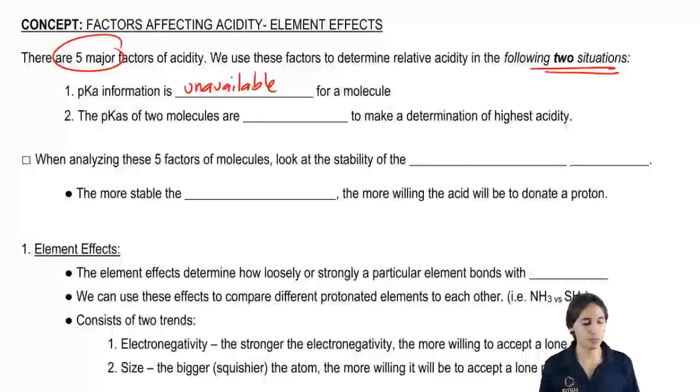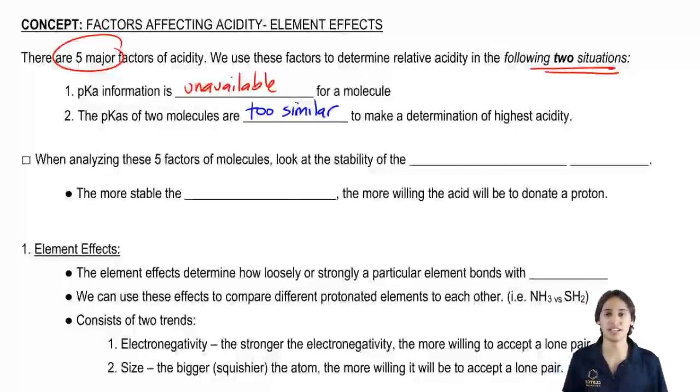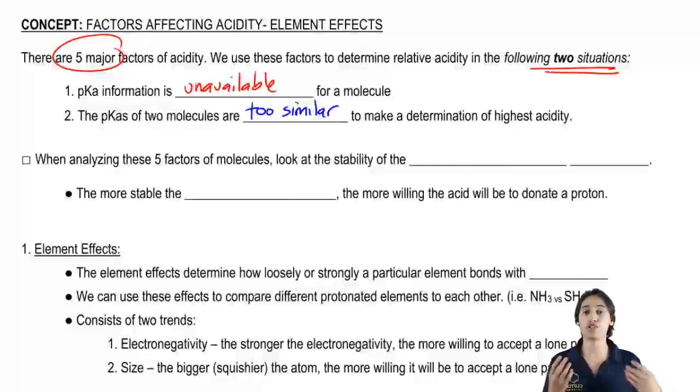A second instance would be if the pKa's of two molecules are too similar to make a determination of highest acidity. So imagine if you're comparing two carboxylic acids. Well, they're both going to have a pKa of around five. So how do I tell which one's more acidic and which one's less acidic? Well, with pKa information, you wouldn't really be able to do that. So we're going to need to look even more in depth into these acids.